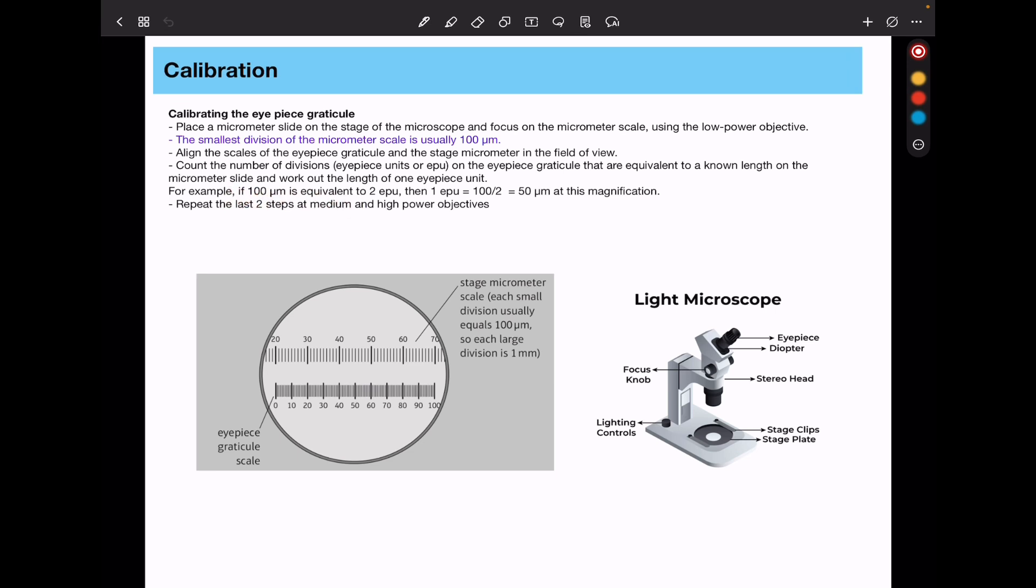The example we have here, if a hundred micrometers is equivalent to two EPUs or two eyepiece units, then it means one eyepiece unit is going to be a hundred divided by two, which is 50 micrometers at that specific magnification. You'll repeat the last two steps at medium and at high power objectives for full calibration to be carried out.